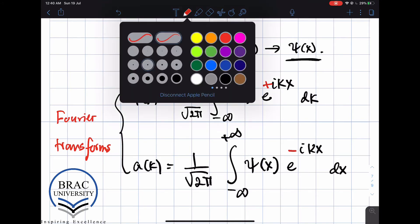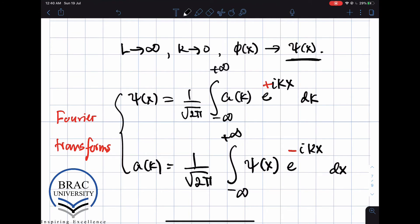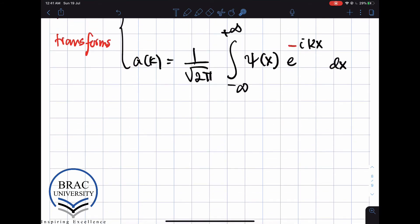So what we can do is now, we can now plug in the expression for a into the first equation. Then we get an expression for ψ(x) in terms of itself, and that is given by ψ(x) is going to be 1/(2π).